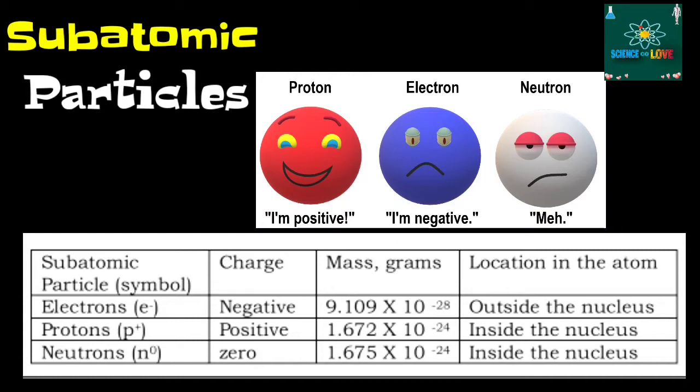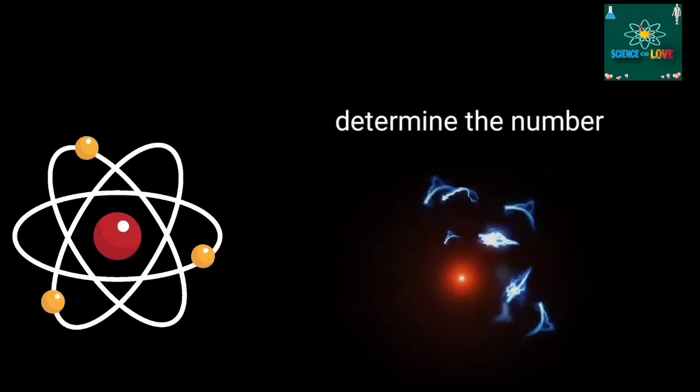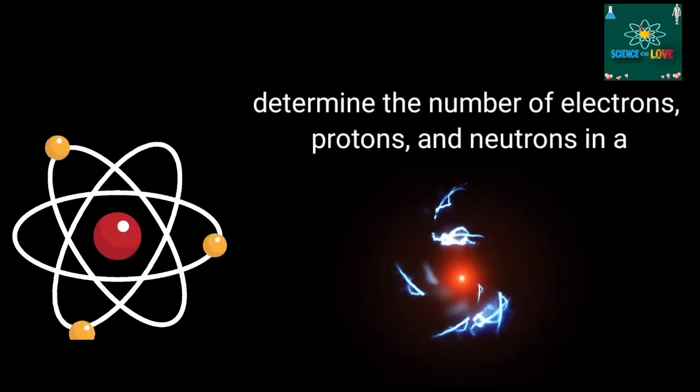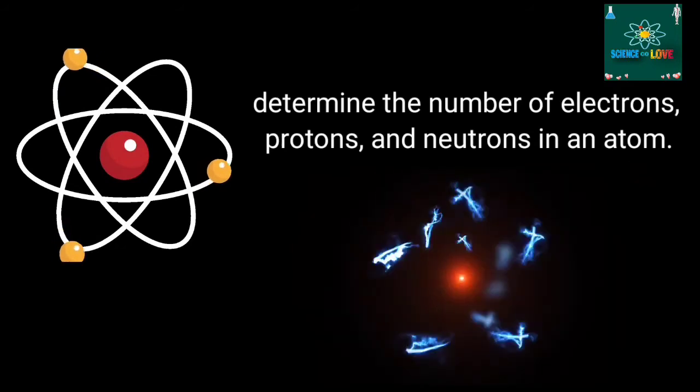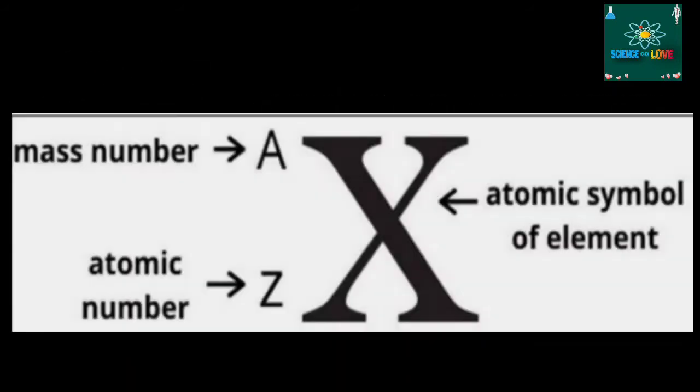Now, this time, we will determine the number of electrons, protons, and neutrons in an atom. Look at the illustration. Elements are given letter symbols, including their atomic number and mass.